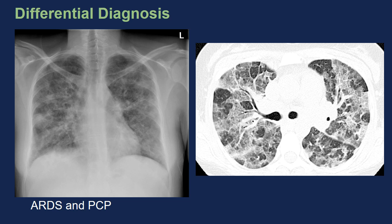Here is another case of RDS and Pneumocystis carinii pneumonia in a patient suffering from HIV infection. Here you can clearly see the crazy paving with some normal parts adjacent to pathological parts.